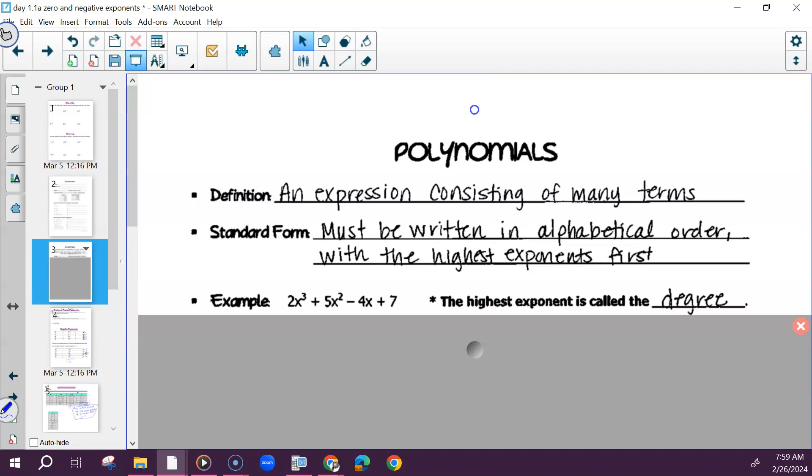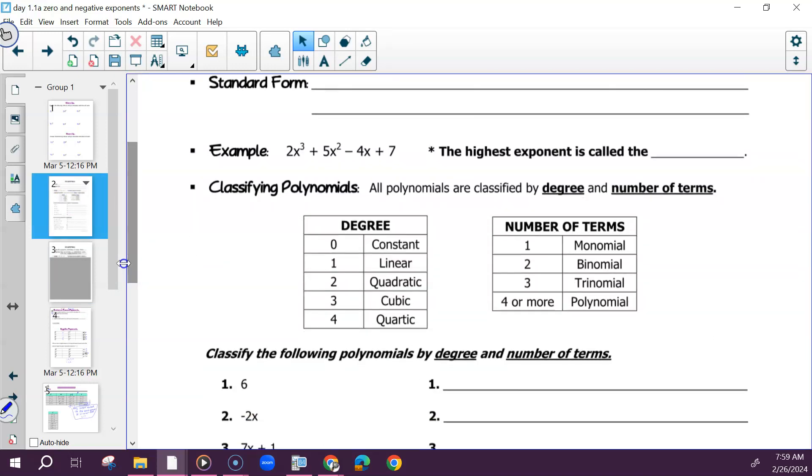You'll see a table underneath that that shows number of terms and degrees. And we're going to add one, I think. So all polynomials are classified by degree and number. So the degree is the exponent. So if there isn't one, if it was just 7, that would be a constant, if you want to take that as an example. Linear would be something without an exponent, but there's an x, so like negative 4x plus 7, that could be linear. Quadratic is anything with an exponent of 2. Cubic is anything with an exponent of 3. Quartic is anything with an exponent of 4. Add one more. 5 is quintic. Because you may see some of those as well.